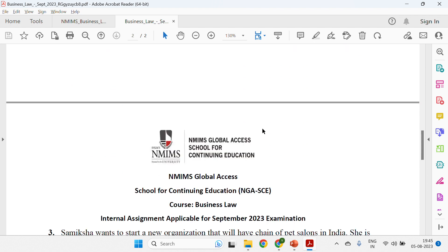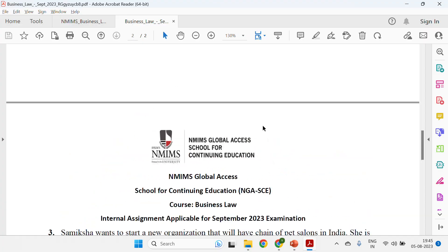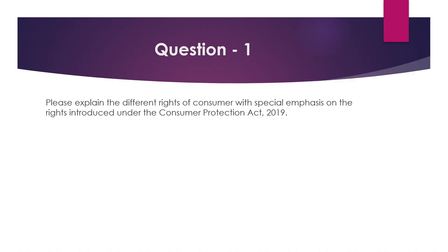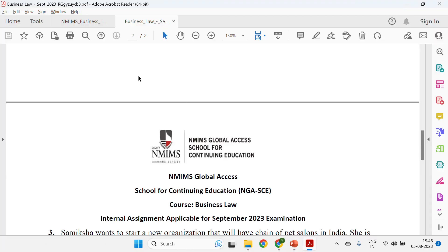Many things are directly provided in the book, so you need to read the sentences and write them in your own words. Let's look at what page numbers to refer to and what content to write for each question. The first question says: 'Please explain the different rights of the consumer with special emphasis on the rights introduced under the Consumer Protection Act 2019.' So refer to page numbers 243 and 263.